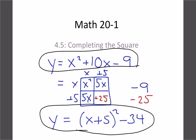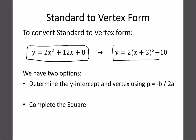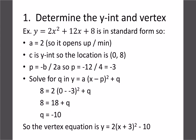We're going to use a backwards foiling approach to get that. But first, let's look at a method we've already learned. In order to go from standard to vertex form, we have basically two options: we can do completing the square, which we'll learn in a minute, or we could use the y-intercept and the vertex p formula that we learned yesterday.